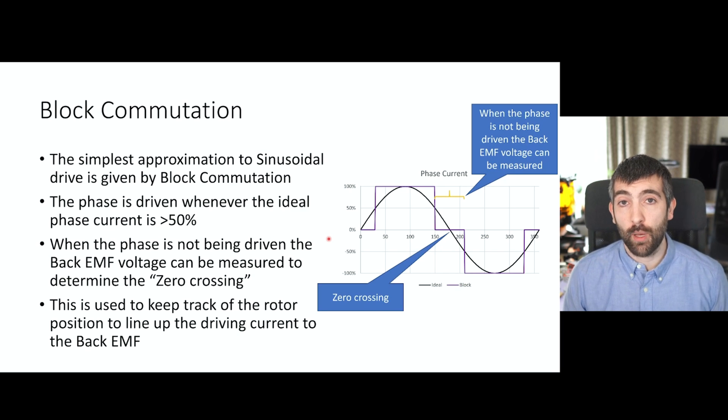There are several different ways that we can drive a motor but the simplest method is called block commutation. In block commutation we simply drive the phase of the motor whenever the ideal driving current is more than 50%. So here in the black line we have the ideal driving current given by the back EMF of the motor, and we simply say well whenever that driving current is greater than 50% I'll drive the phase, and whenever that ideal driving current is less than 50% I won't drive the phase. And similarly when it's in the reverse direction I'll drive it in the reverse direction and then I won't drive it. And this is a really simple method. This is basically just rounding, more than a half round up to one drive the phase, less than a half round down to zero and don't drive the phase.